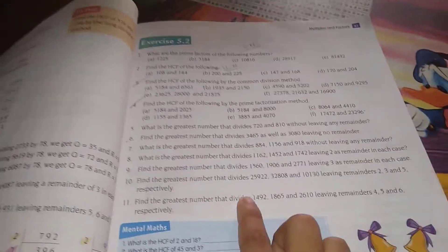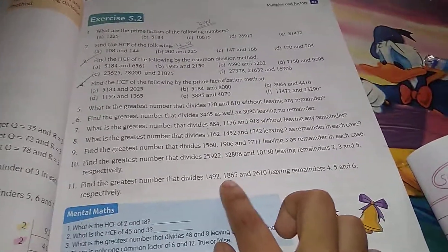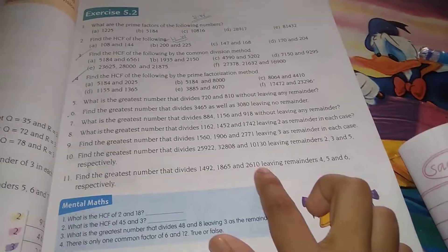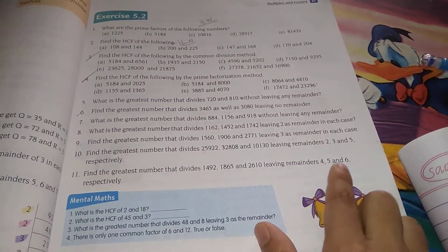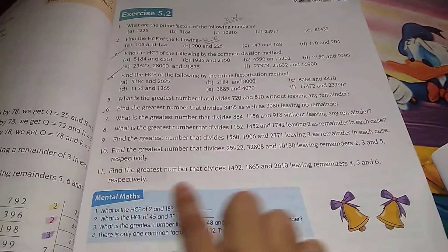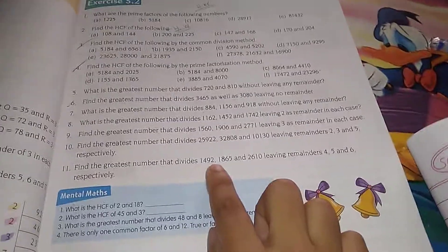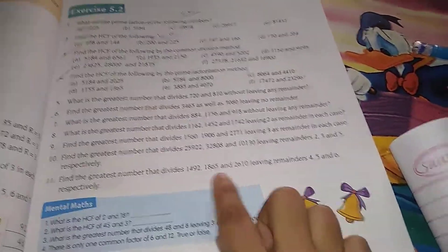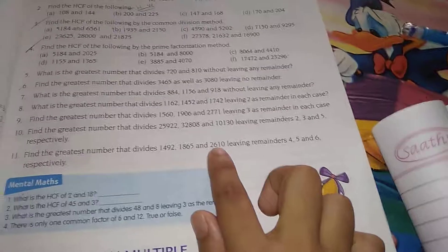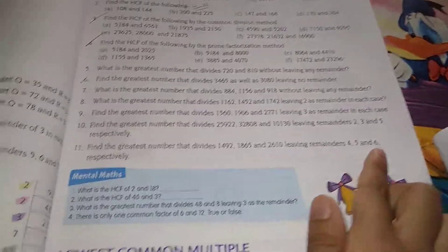Find the greatest number that divides 1492, 1865, 2610 leaving remainders 4, 5, 6 respectively. So we have to subtract 1492 by 4, 1865 by 5, 2610 by 6.